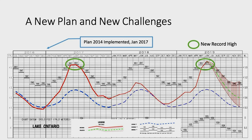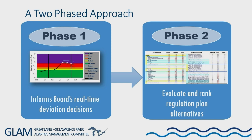With Plan 2014 came historic high water levels that were not included in the original plan formulation. This spurred an initial evaluation of the regulation plan to respond to these high water events. In phase one of the expedited review, the focus was on a decision support tool for the board to understand the impacts of different outflows on which communities. We are now in phase two, which is to evaluate and rank regulation plan alternatives — whether minor or major changes from Plan 2014 — based on what we call performance indicators.